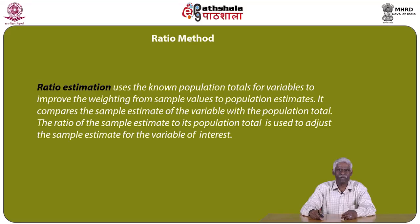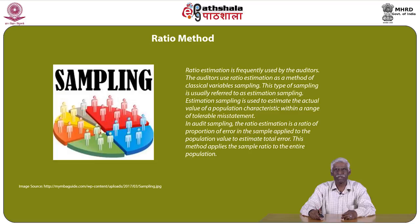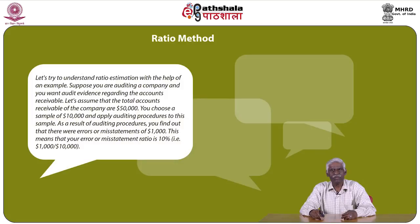Now let us discuss the ratio method. Ratio estimation uses known population totals for variables to improve the weighting from sample values to population estimates. It compares the sample estimate of the variable with the population total; the ratio of the sample estimate to its population total is used to adjust the sample estimate for the variable of interest. Ratio estimation is frequently used by auditors as a method of classical variable sampling, referred to as estimation sampling, used to estimate the actual value of a population characteristic within a range of tolerable misstatement. In audit sampling, ratio estimation is a ratio of the proportion of errors in the sample applied to the population value to estimate total error.